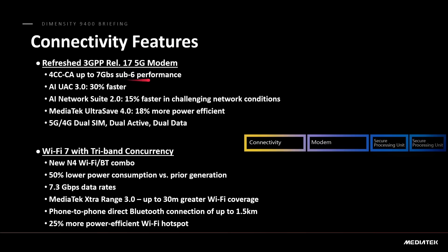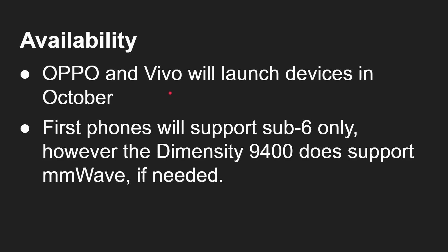For connectivity, it's a 5G device with sub-6GHz support at seven gigabits per second, millimeter wave support for relevant markets, and Wi-Fi 7 with tri-band concurrency. On availability, Oppo and Vivo will launch devices with this chip in October — several weeks ahead of expected Snapdragon devices. These will launch first in China, with international releases to follow. The first phones will be sub-6 only, but the Dimensity 9400 does support millimeter wave where appropriate.